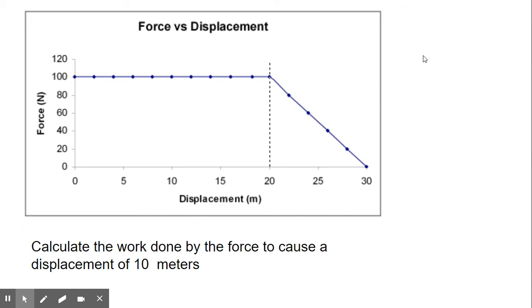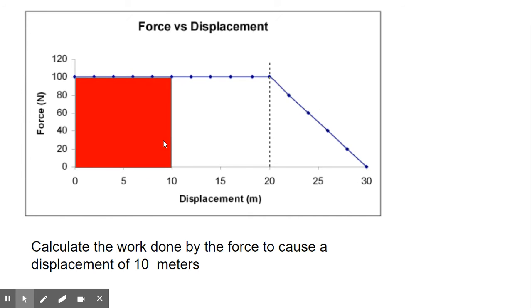So let's look at this problem. You have a graph of force versus displacement. The problem says calculate the work done by the force to cause a displacement of 10 meters. So we are only looking at the work done by the force for 10 meters displacement. So the area under the curve would be this.